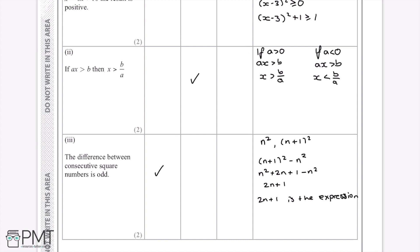And this would get us both marks, as we have stated that it's always true. And then we've found out that the difference between these two numbers always gives us 2n plus 1, and we've shown that we know that this is the expression for an odd number.